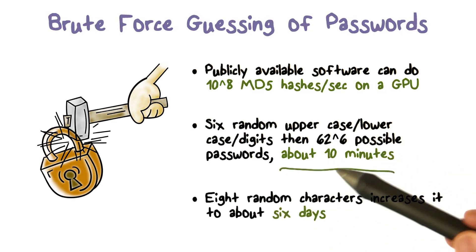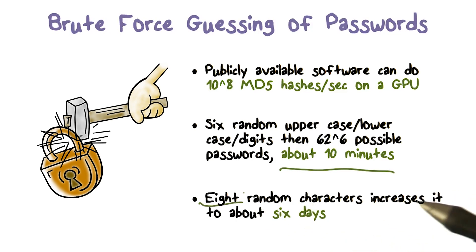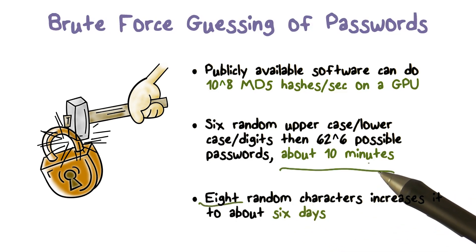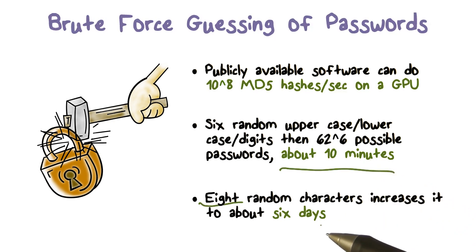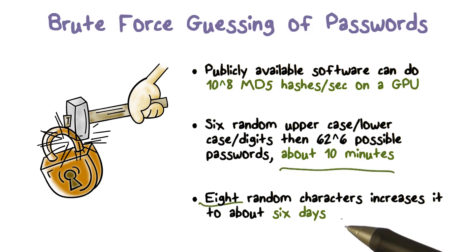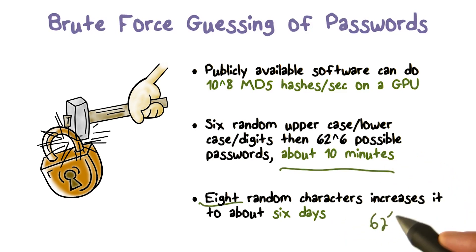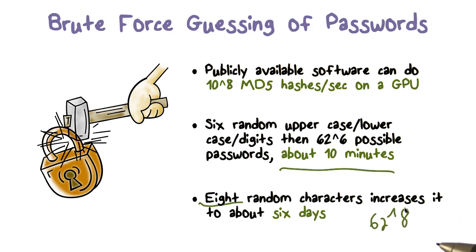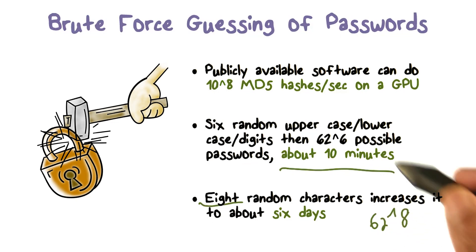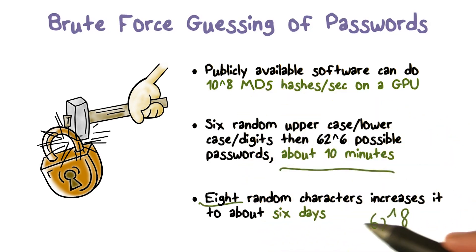One thing we can do is increase the size of the password — ask people to pick longer passwords. Going from 6 to 8 characters, the effort for the hacker goes up from minutes to about two days. With eight random characters from the same set, you get 62 to the power of 8. If you add special characters the calculation changes slightly, but dividing by 10 to the power of 8, it works out to about six days.